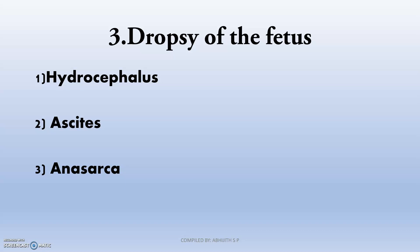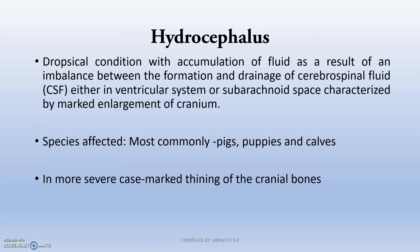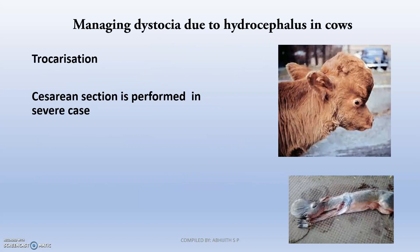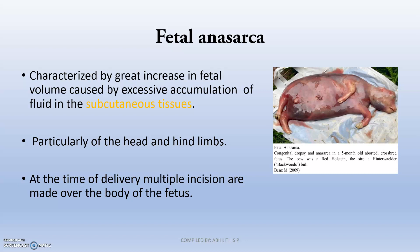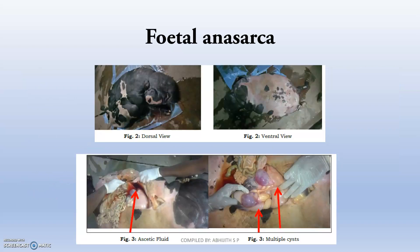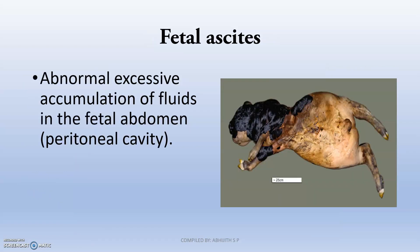The next condition is dropsy of the fetus, which includes hydrocephalus, ascites, and anasarca. Hydrocephalus is the accumulation of fluid resulting from an imbalance between the production and drainage of CSF in the brain or cranial portion. Fetal anasarca is excessive accumulation of fluid in the subcutaneous tissue, mainly seen in pigs, particularly in the head and limb regions, and sometimes in cases of multiple fetuses. Fetal ascites is abnormal excessive accumulation of fluid in the fetal abdomen, that is the peritoneal cavity.